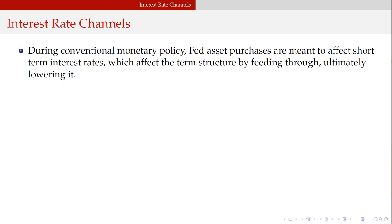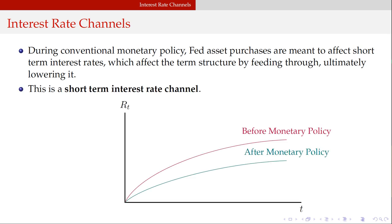During conventional monetary policy, the Fed just affects short-term interest rates, which feeds through the term structure, ultimately lowering it. This is known as a short-term interest rate channel. The idea is that this is the yield curve before monetary policy, this is the yield curve after — it flattens the yield curve.